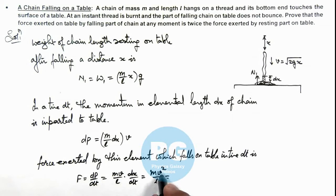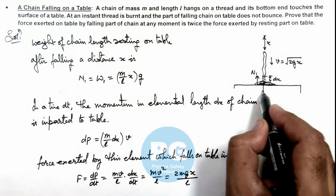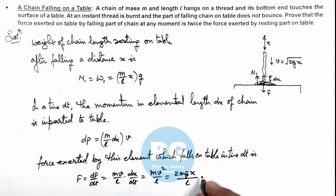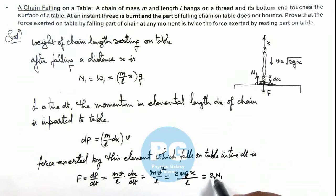And if we substitute the value of v² this is 2gx, so this is 2mgx upon l. And here we can see this force which the falling part of chain is imparting on table, that is F, this is equal to twice the n1, where n1 is the force which resting part of chain is imparting.